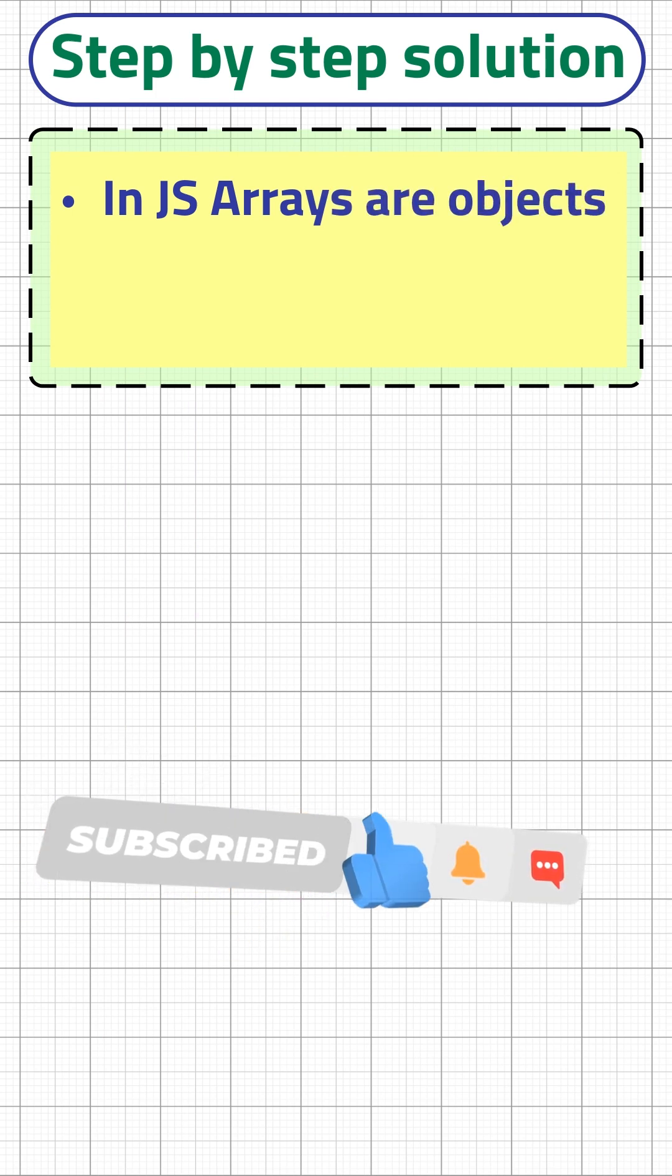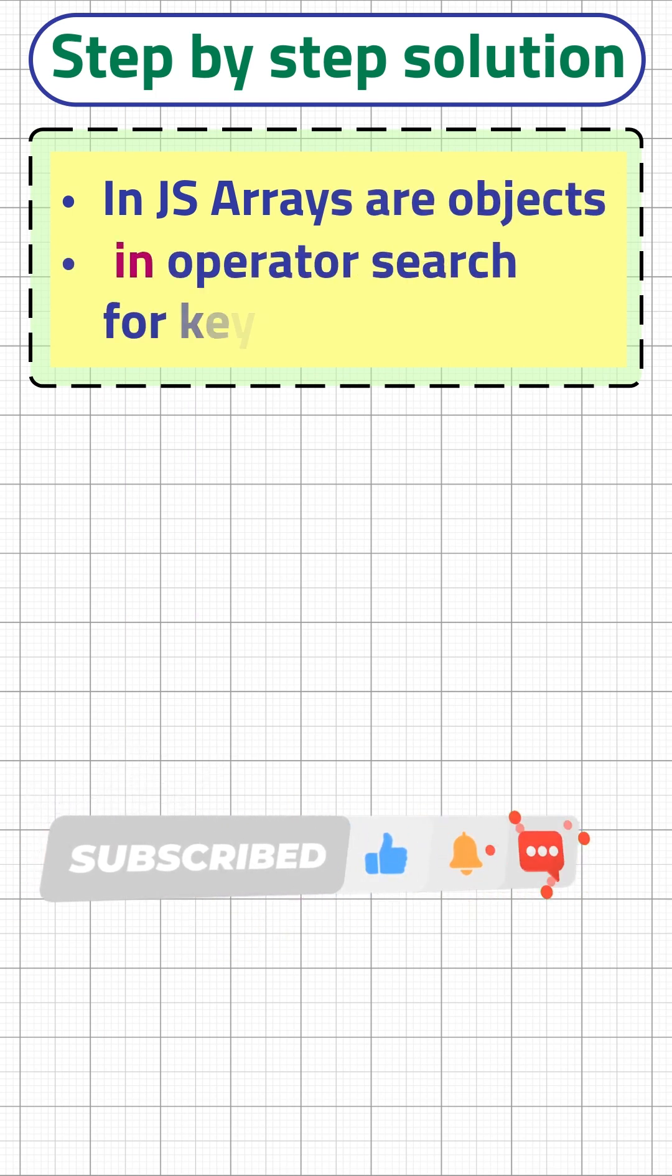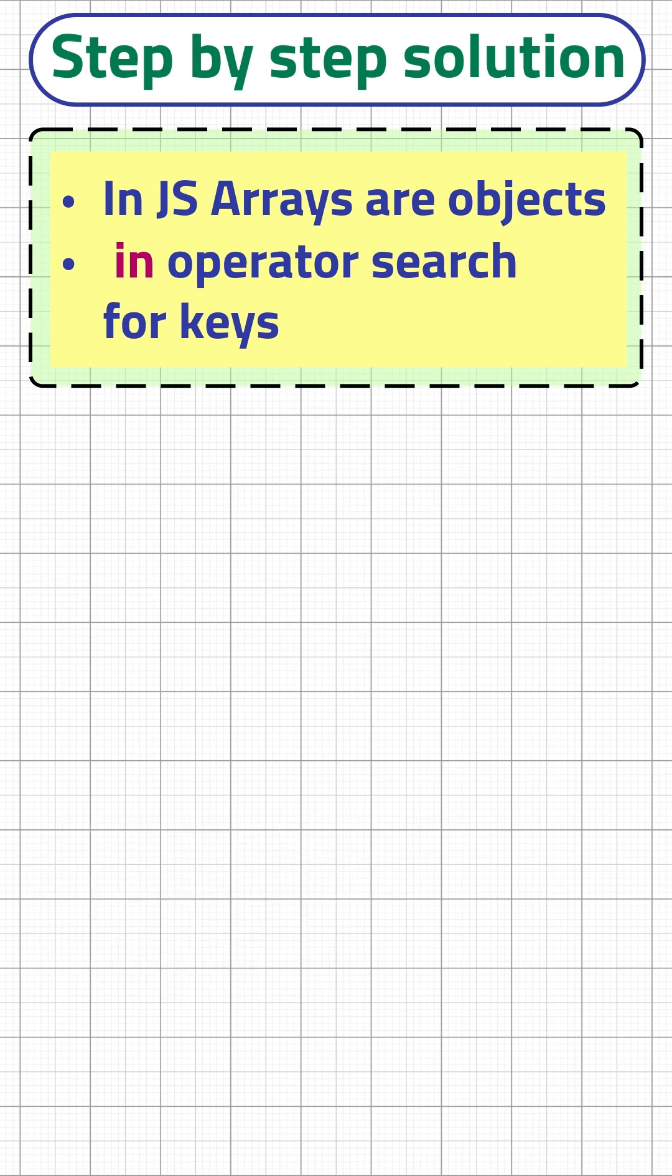In JavaScript arrays are objects and the in operator doesn't check for array values like 1, 2, 3, it checks for keys.